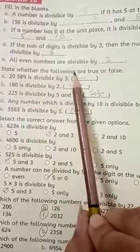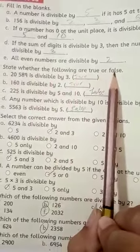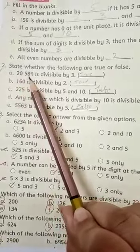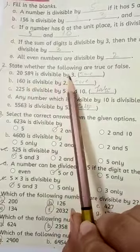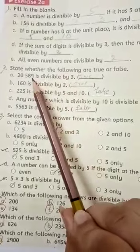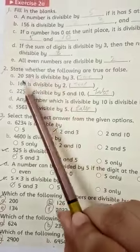State whether the following are true or false. A. 20,589 is divisible by 3. True. Because we have 9 at unit place value, which will be divisible by 3.